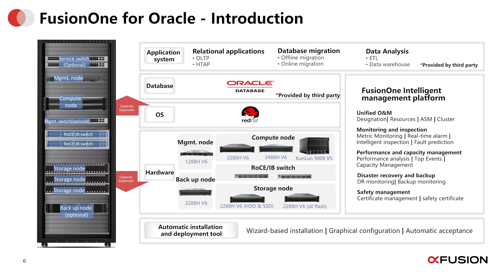For this solution, the servers include management nodes such as 1288HV6, compute nodes 2288HV6, 2488HV6, and Kunlun 9000 V5, backup nodes 2288HV6, and storage nodes including the large capacity 2288HV6 with HDD and SSD mixed flash solution and SSD all-flash solution. All-flash storage nodes have better performance and higher prices than the mixed flash solution, so we need to recommend the storage node solution based on project requirements.